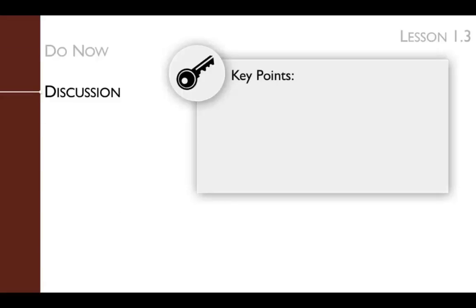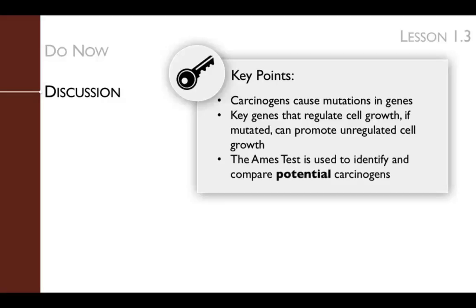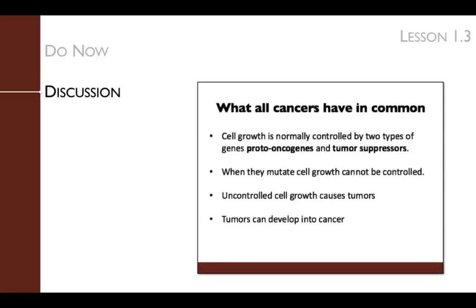The key points of the discussion include the following: carcinogens cause mutations in genes; key genes that regulate cell growth, if mutated, can promote unregulated cell growth; and the Ames test is used to identify and compare potential carcinogens. First, we engage in a discussion of the unique qualities that cancer cells have, such as uncontrolled growth regulated by genes that control growth. When the rate of growth exceeds the rate of death, a tumor is formed.